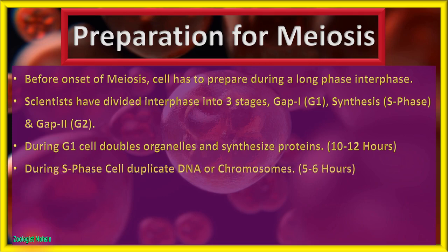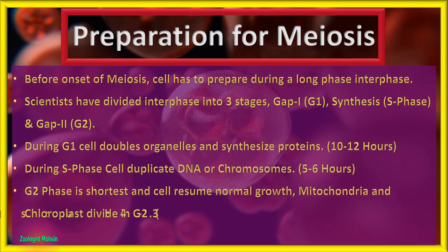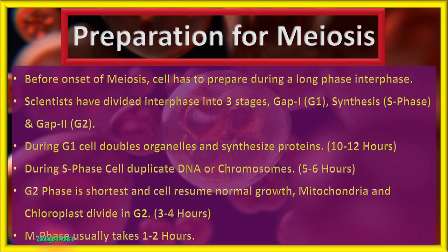During S phase, the cell duplicates its DNA or chromosomes, and it takes 5 to 6 hours. G2 phase is the shortest and the cell resumes normal growth. Mitochondria and chloroplasts divide in G2, and it takes 3 to 4 hours. The M phase, or mitotic phase, usually takes only 1 to 2 hours.